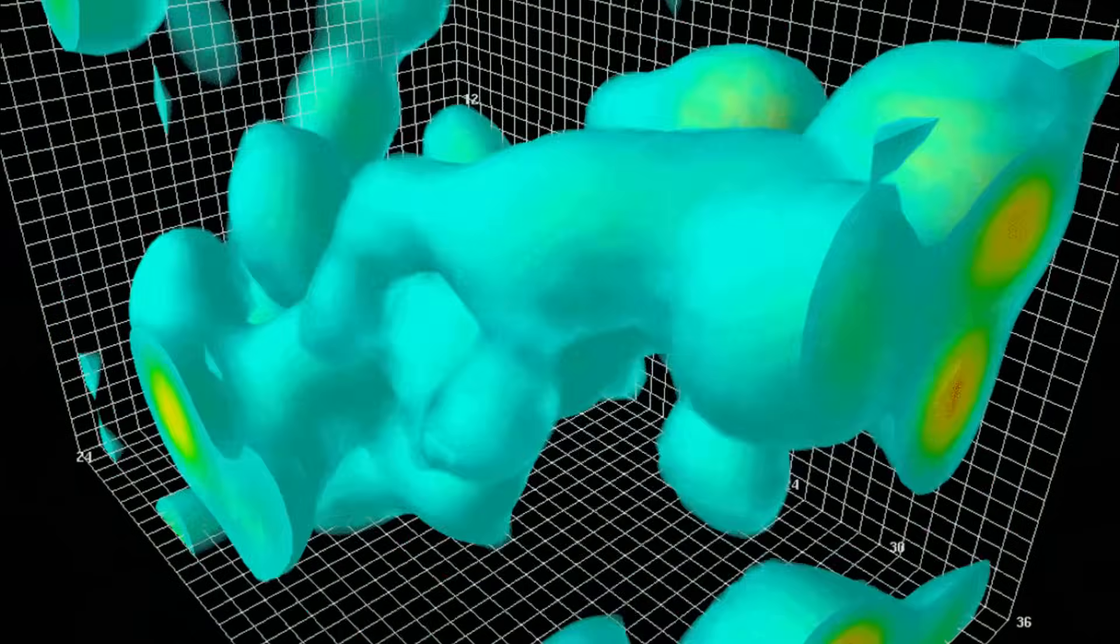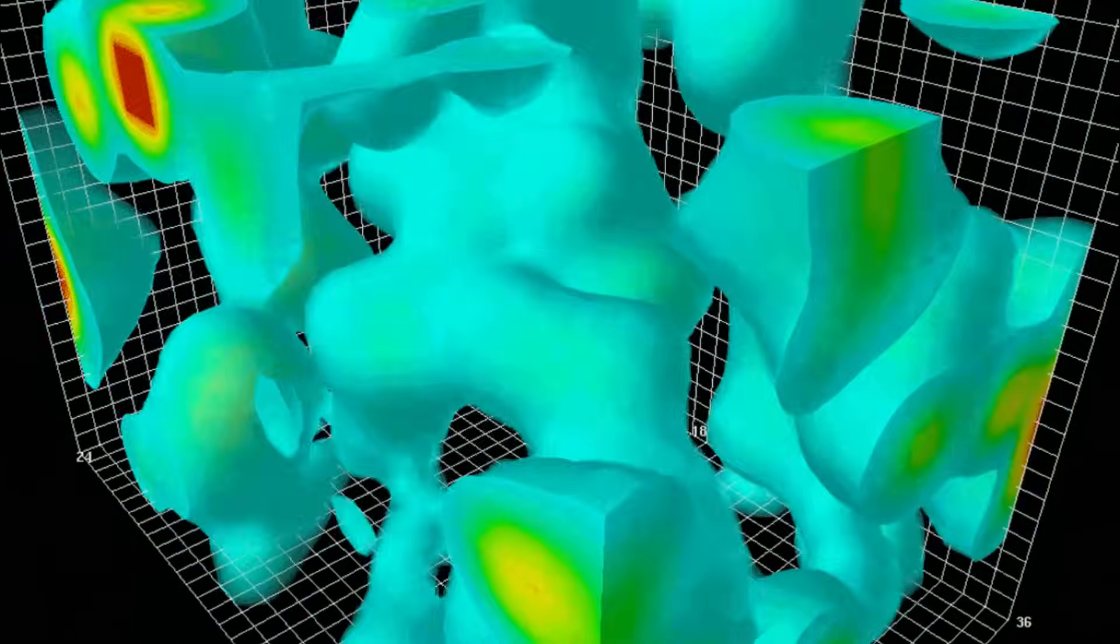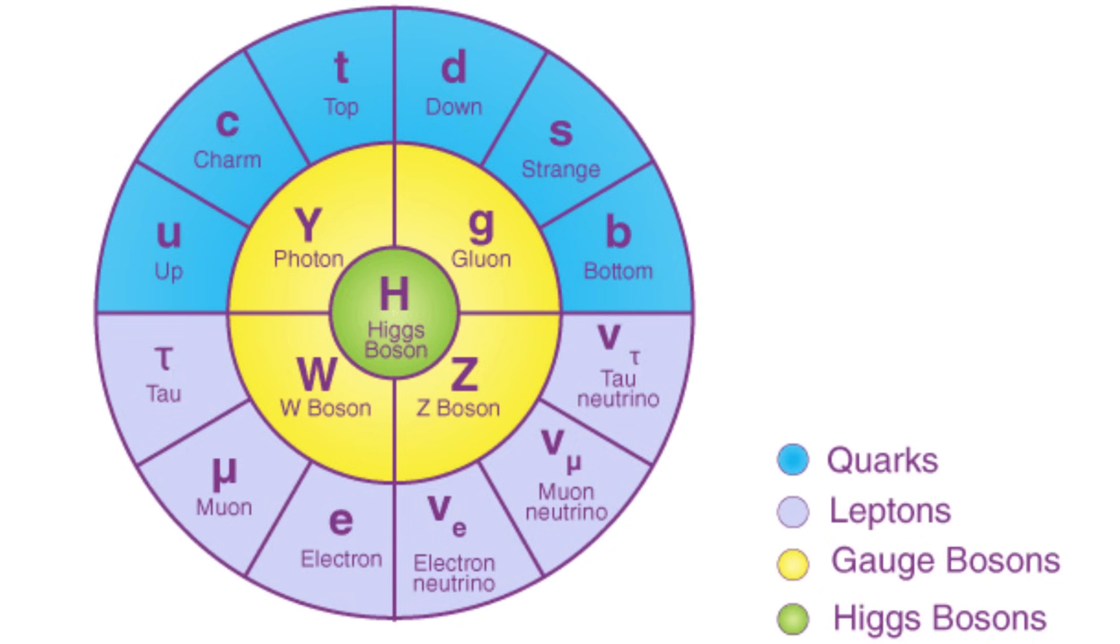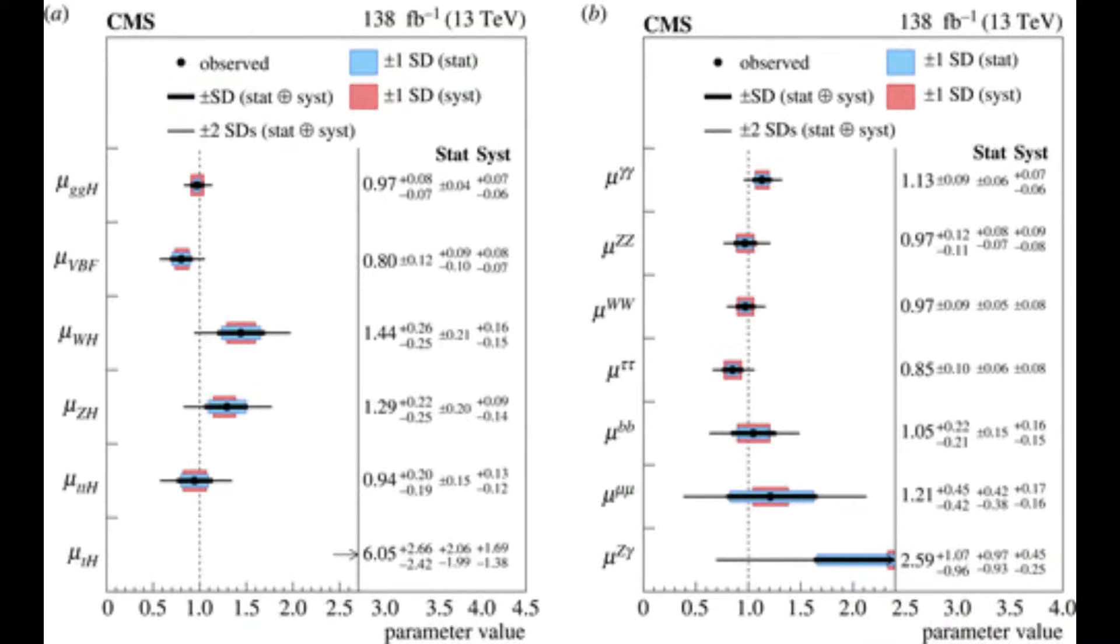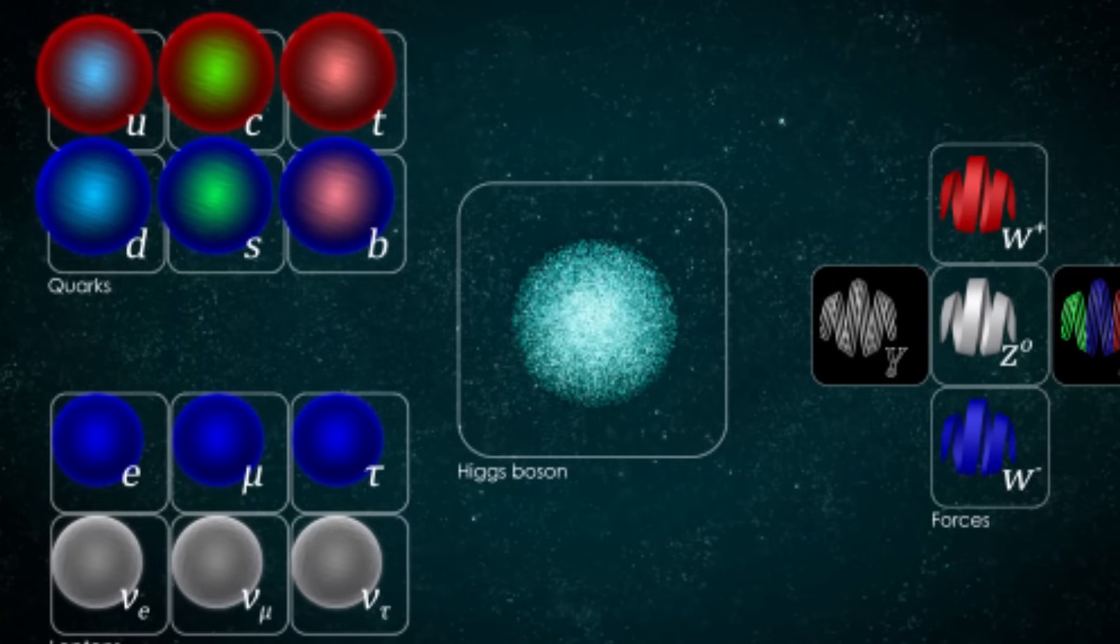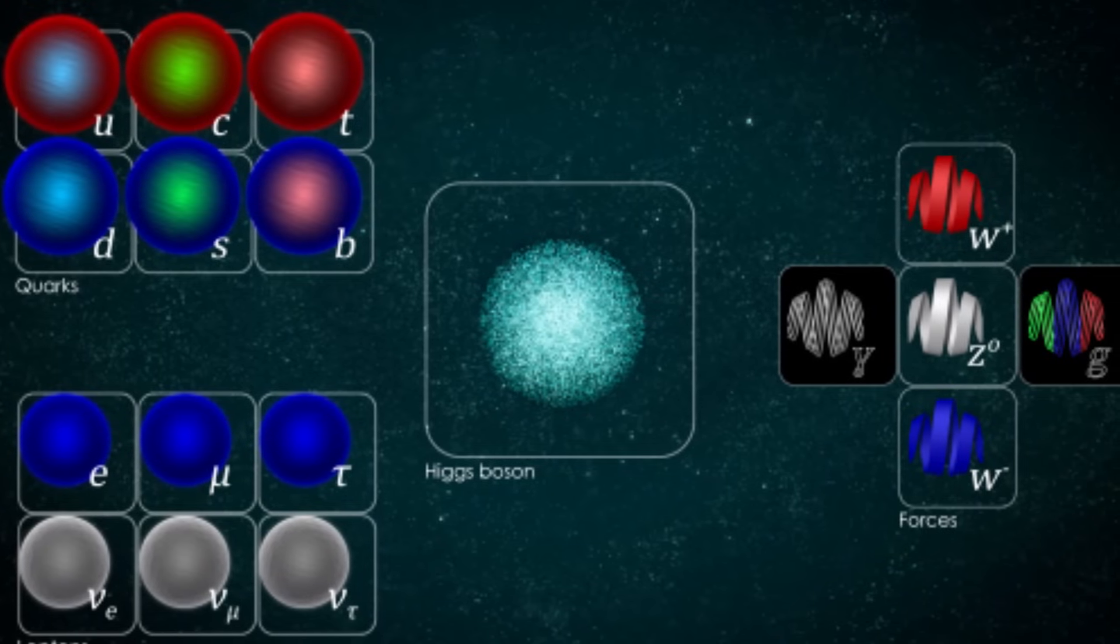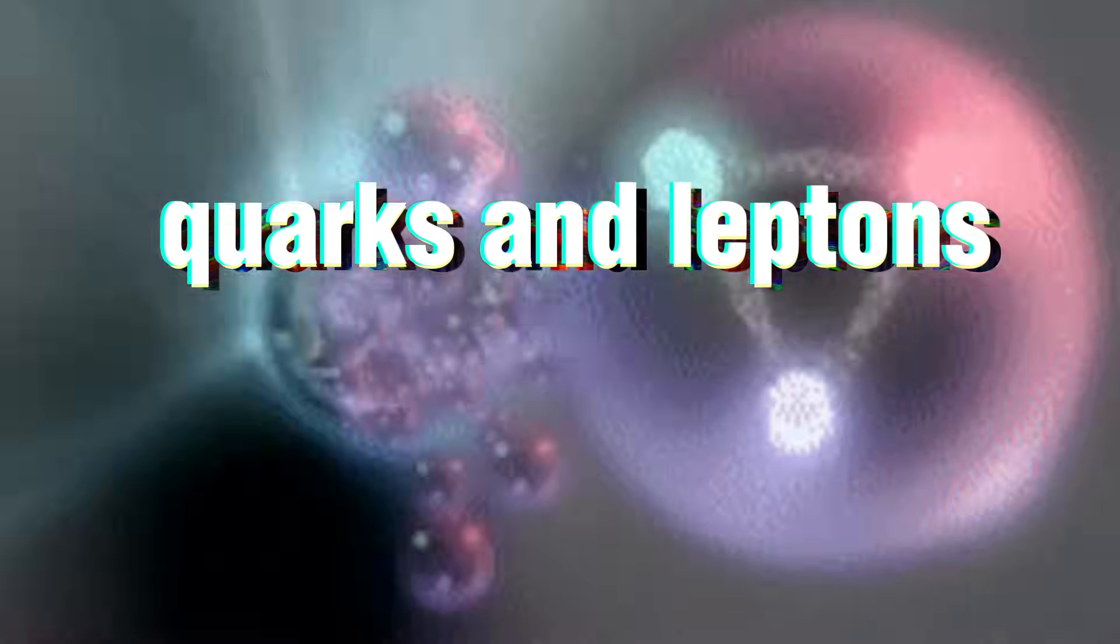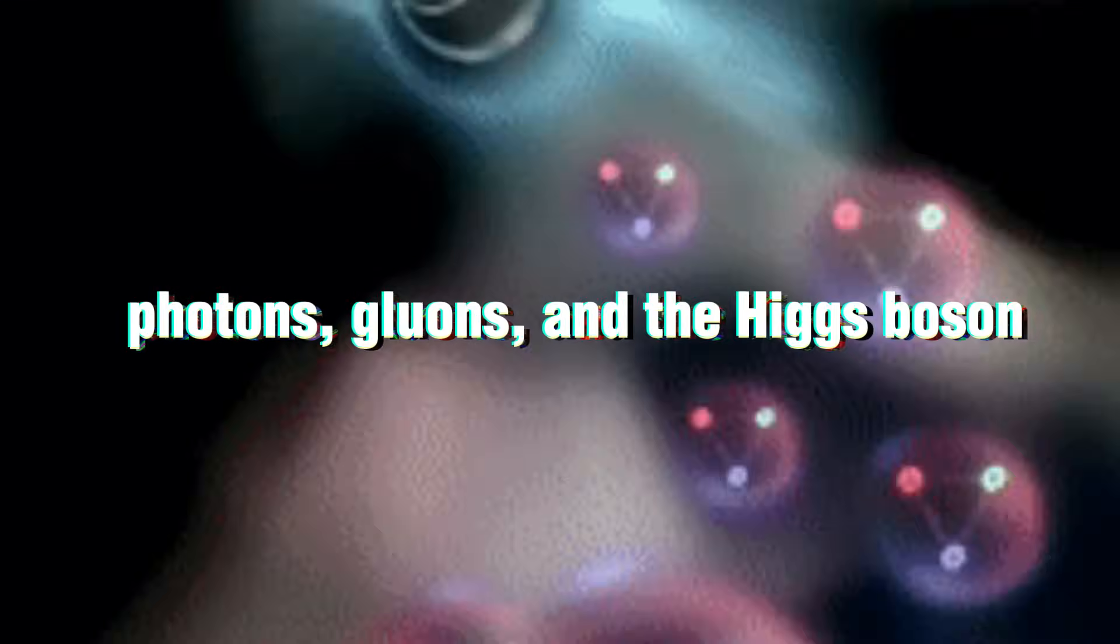The particle physics standard model, which explains the underlying forces, is likewise no longer the most recent. It was a theoretical framework that was created in the 1970s that describes the underlying particles and forces that comprise our universe. Before the work in Geneva, particles like quarks and leptins, as well as force transmitters like photons, gluons, and the Higgs boson were only theories.